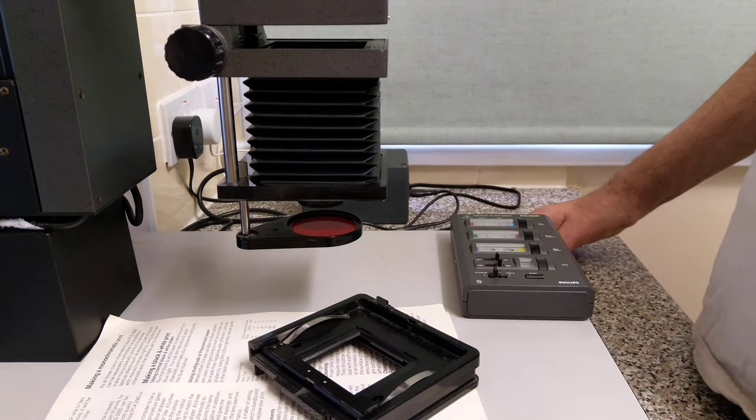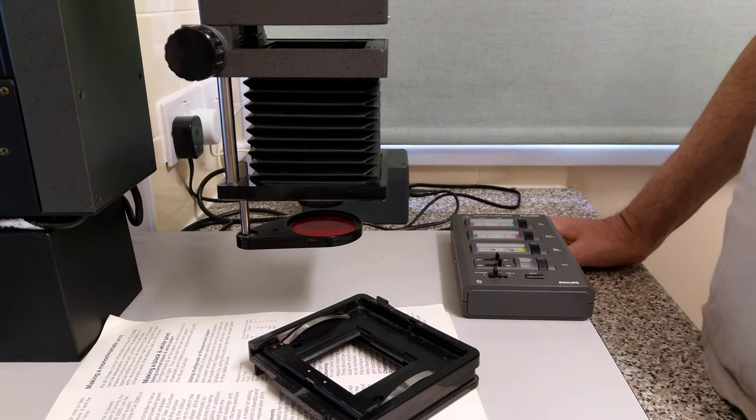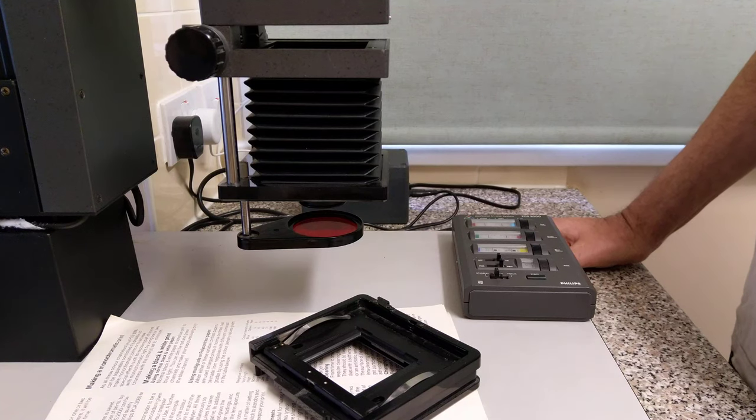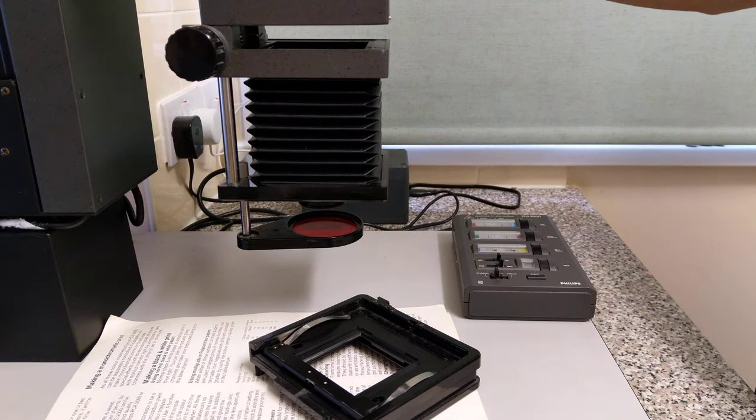Depending on the format of film that you're shooting, that will determine the type and size of enlarger that you need to make your images bigger. This is my enlarger that I'm using at the moment. This is a Philips PCS2000. This is a color enlarger with a color head.